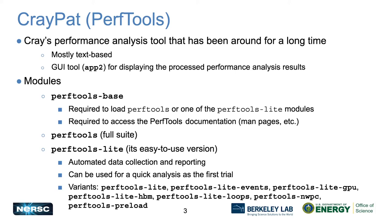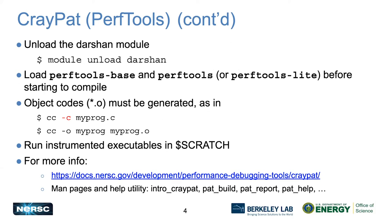CrayPat is a Cray text-based performance analysis tool that has been around for a very long time. It is made of several module parts. The perftools-base module is required to load before loading the actual performance tool module. PerfTools is the full suite, and PerfTools-lite is an easier-to-use version. To use CrayPat, you must first unload the Darshan module — Darshan is another profiling tool for I/O that can interfere — and then load the perftools-base or perftools modules before you compile.